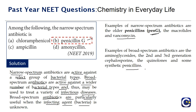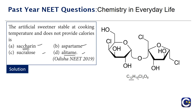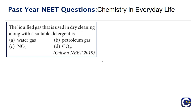The next question came in the Odisha paper, NEET 2019: which artificial sweetener is stable at cooking temperature and does not provide calories? The four options are saccharine, alitame, sucralose, and aspartame. Saccharine and alitame are deep sweeteners. Sucralose, with formula C12H19Cl3O8, is stable at cooking temperature and does not provide calories. Aspartame is stable only at cold temperatures. So the correct answer is sucralose.